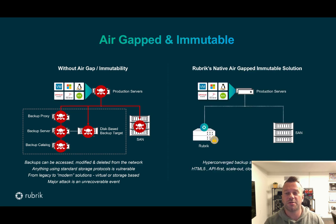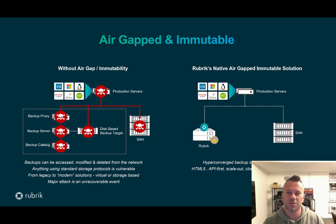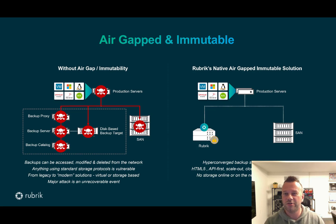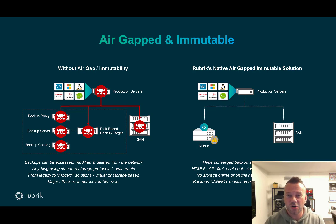Rubrik changed the market five years ago with the first hyper-converged backup software and storage — HTML5, API first, cloud integrated, scale out, instantly mount your data. But the key differentiator no one can emulate is that by collapsing the stack — you can't buy the storage separately, it's intertwined with the backup software — Rubrik gives you a logically air gapped backup platform. There is no storage online or on the network. On top of that, Rubrik built its own proprietary file system that is natively immutable and append-only, so there is no physical way to edit an existing backup once written.